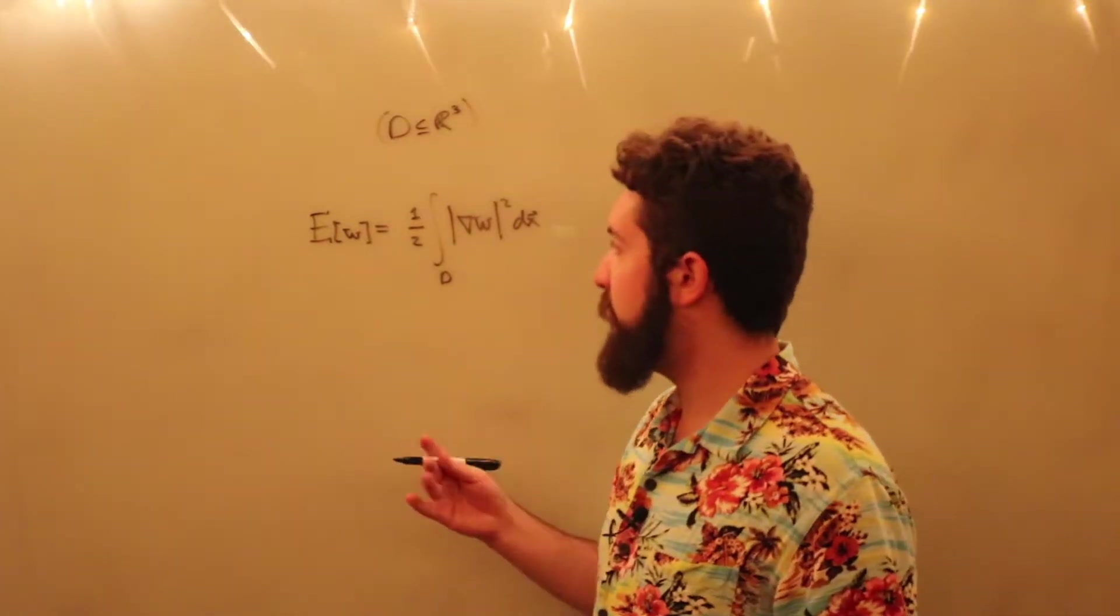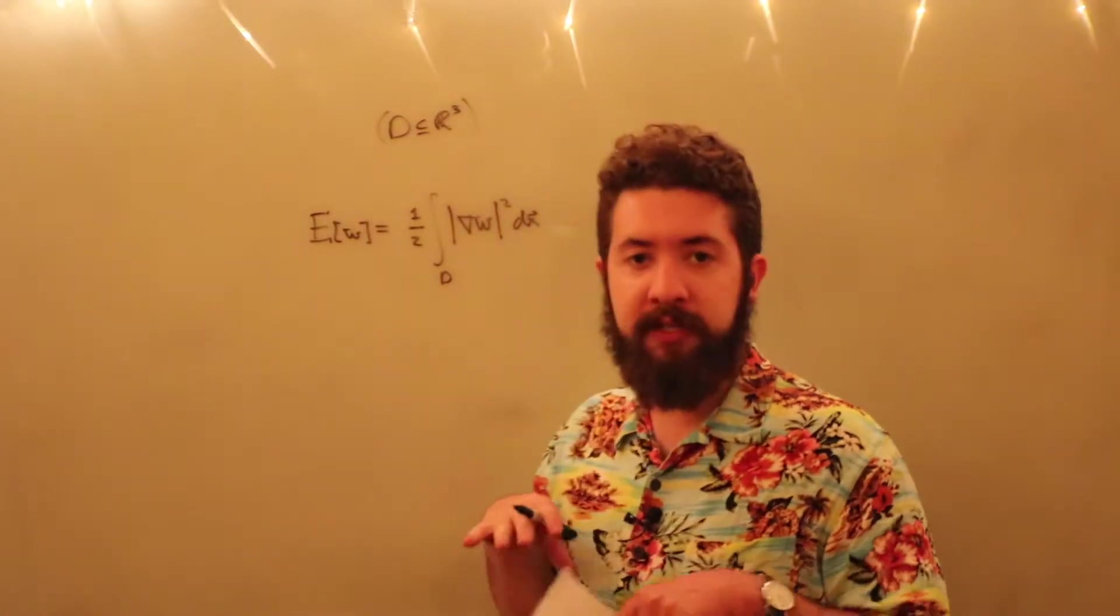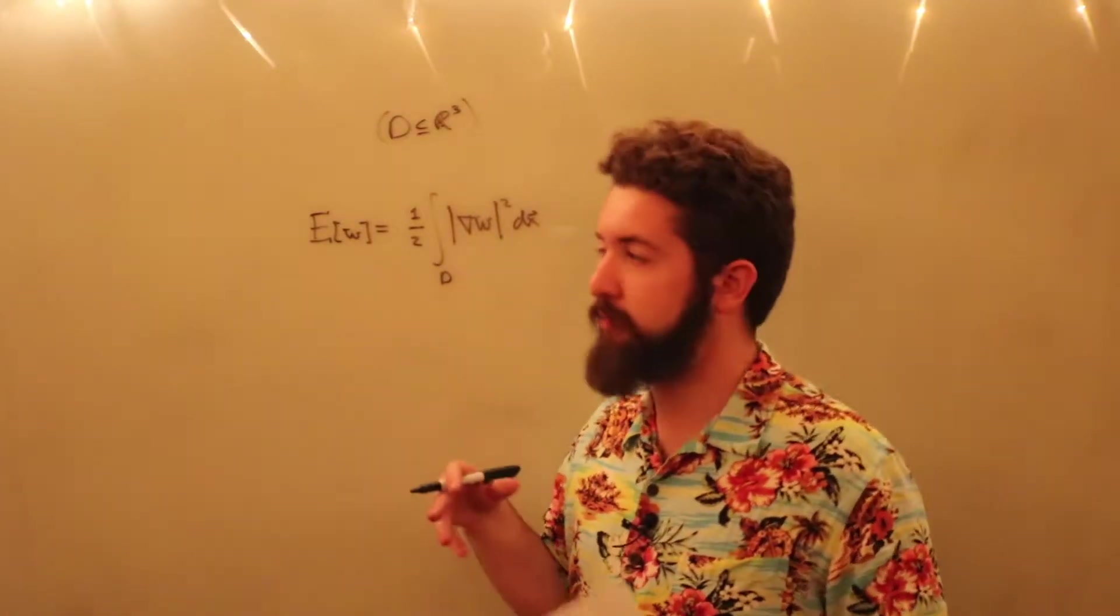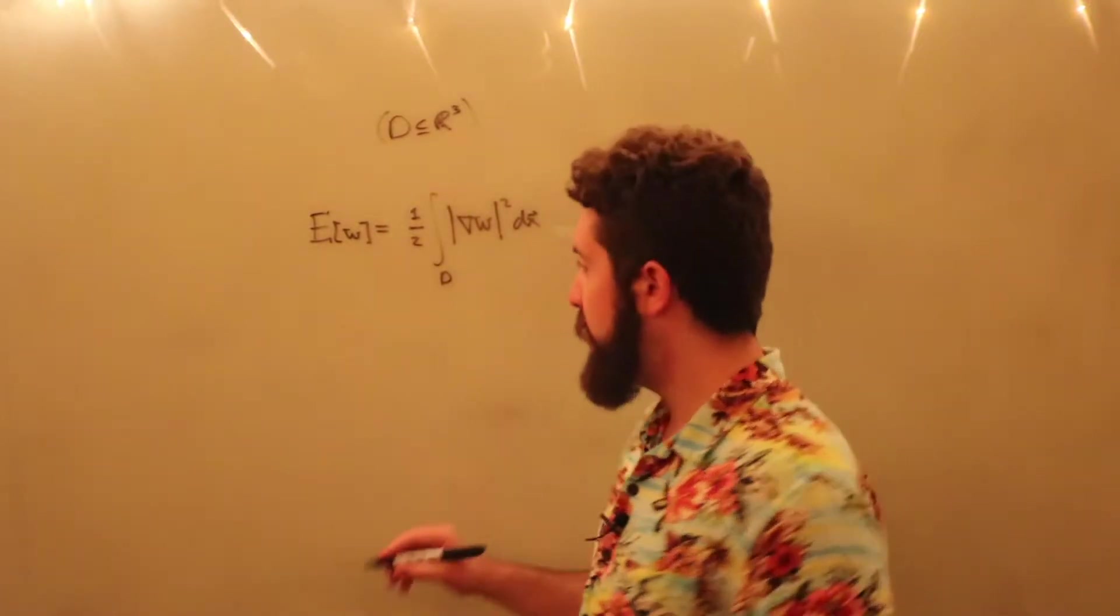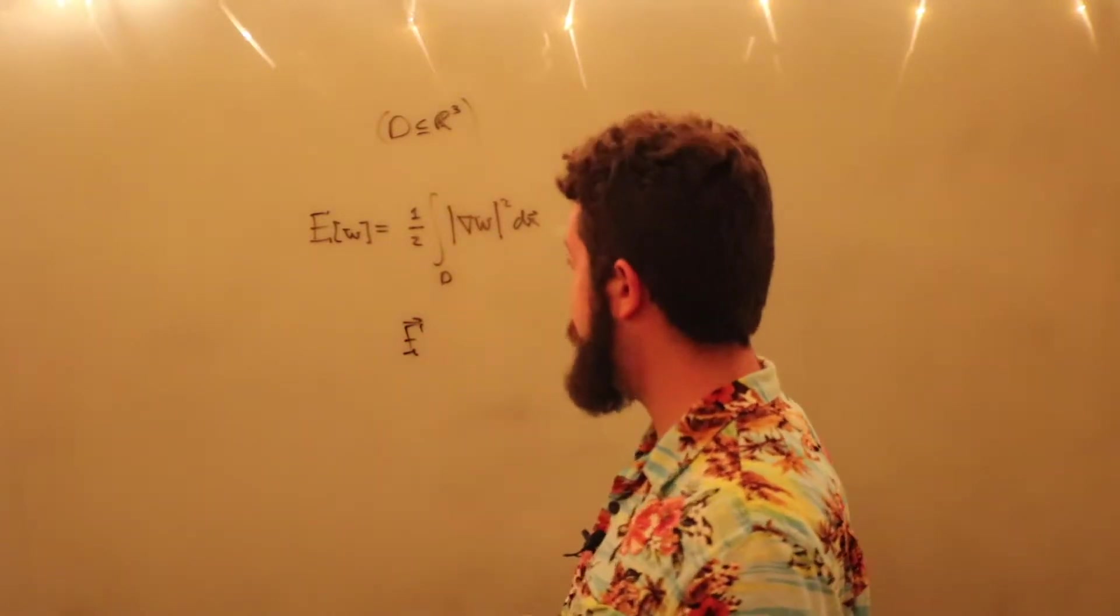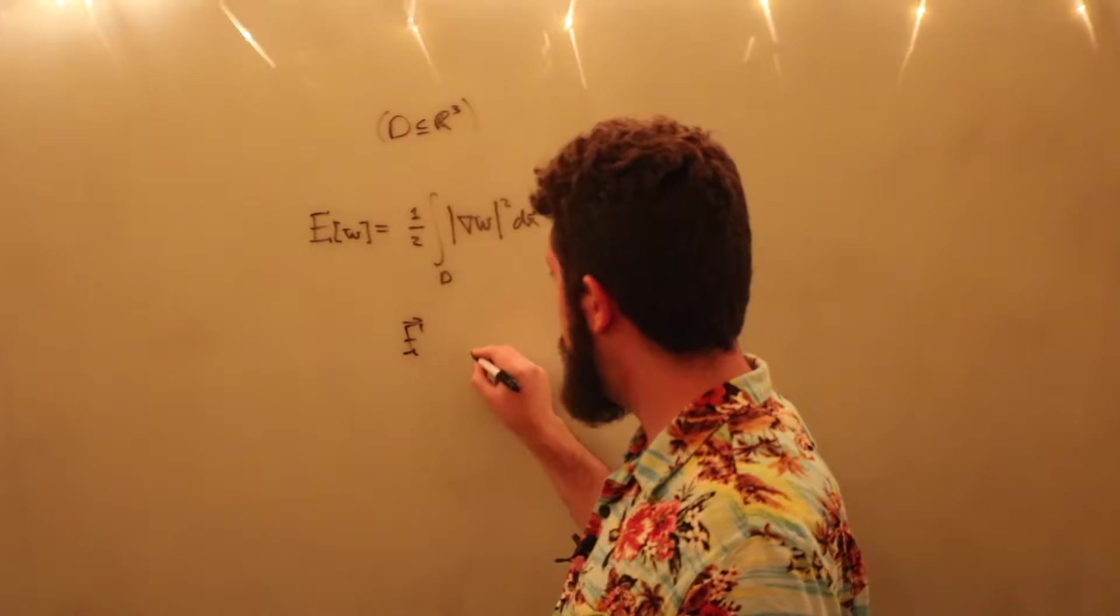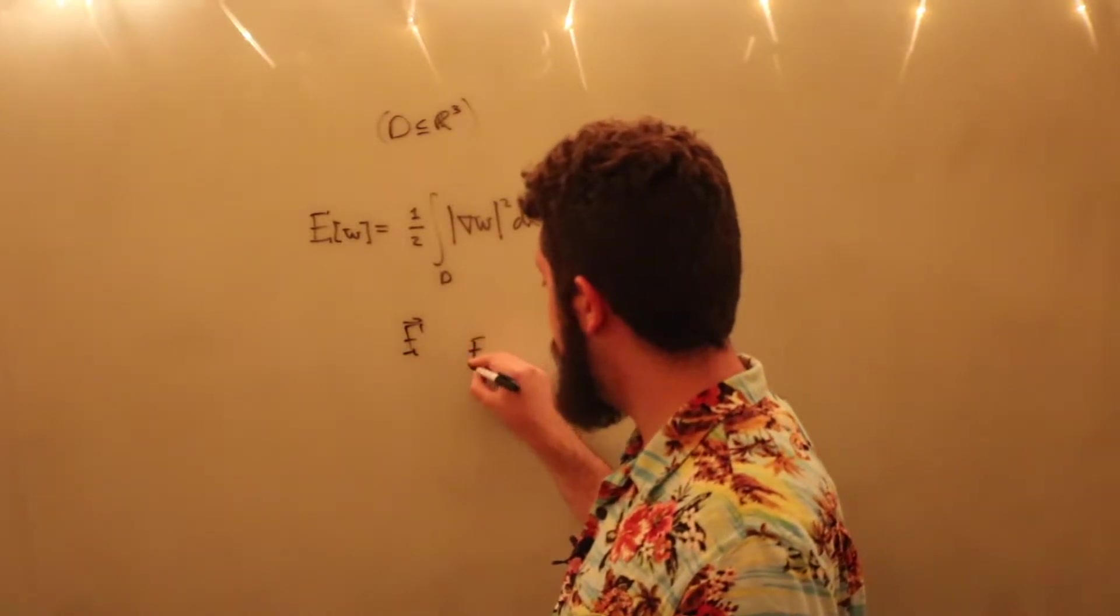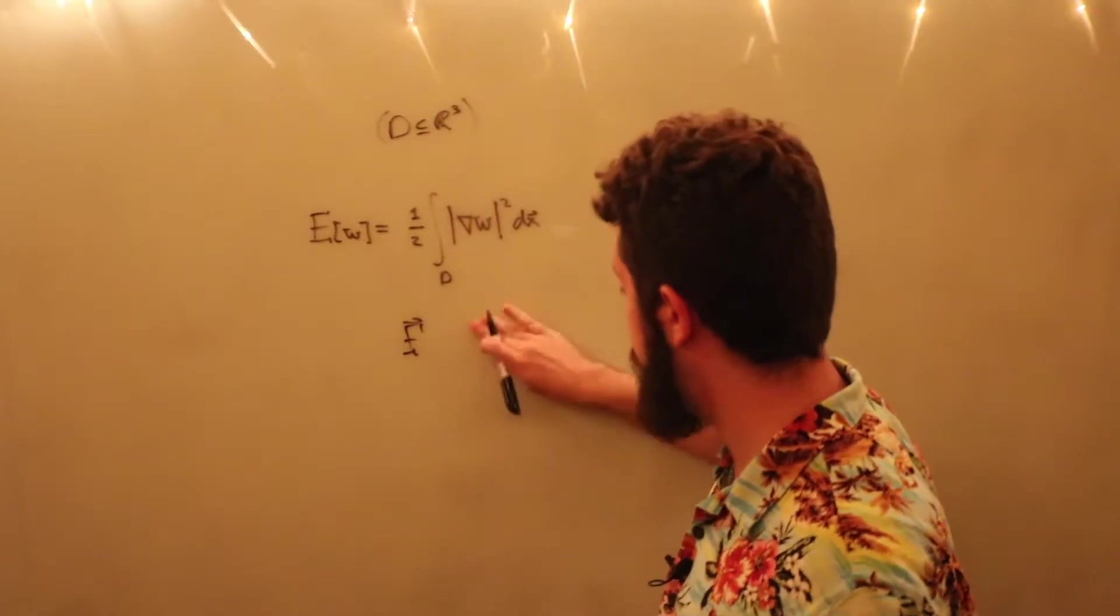And it shows up anywhere that there's a calculation of energy being done for a continuous distribution of something with energy. So, in electrostatics, the way you'll see this is that if E is the electric field, then you'll get that the energy of an electric charge distribution, a different E, actually let's just, I won't use E for the confusion.